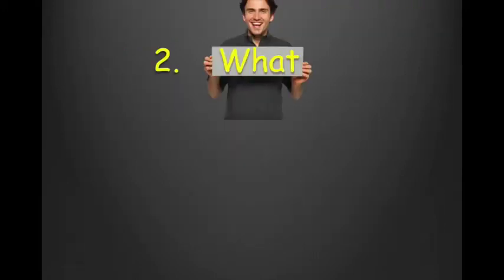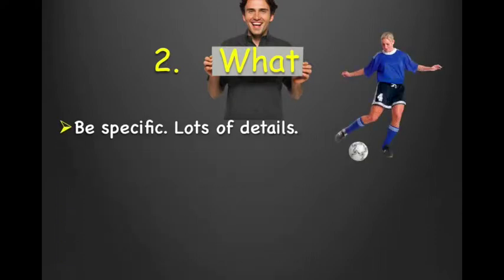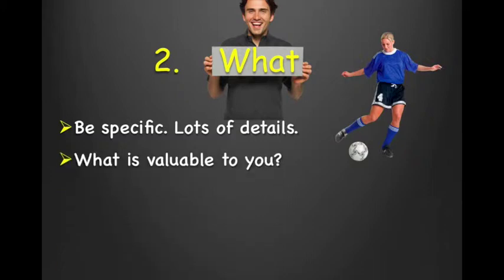The second component is the what — that's your specific goal. You need to add lots of details. What is valuable to you? What is your life missing? What do you want to do and want to be doing that so far you've only dreamed about? What are your unspoken passions? Write this as a positive rather than a negative, because it's more motivating to work towards something than to run away from something — for example, by saying 'I want' instead of 'I don't want.'